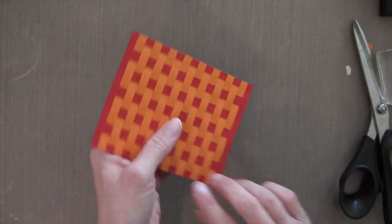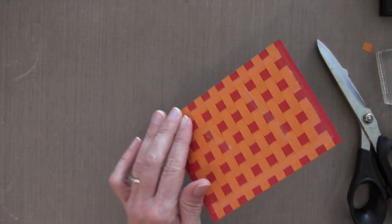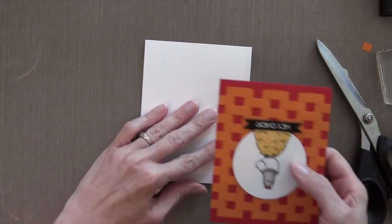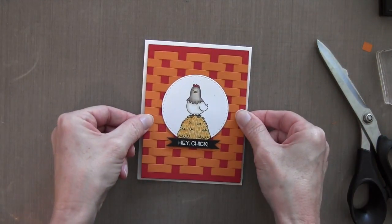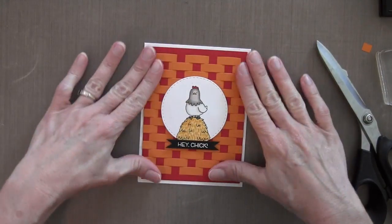And then finally I'll grab my ATG and I'm going to put some tape runner on the back and adhere it to a four and a quarter by five and a half inch folded piece of Neenah solar white cardstock. And the die fits just in the center so you have about an eighth of an inch mat on all sides.